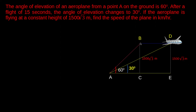We know that speed is given by distance travelled divided by time taken. To find the speed, first we have to know the distance travelled in 15 seconds — that is, the distance from C to E.